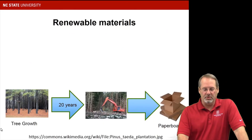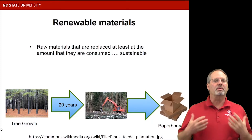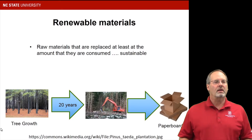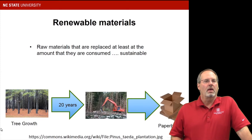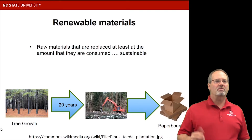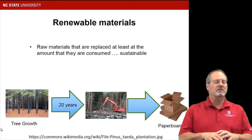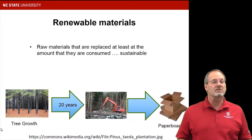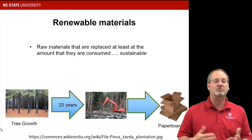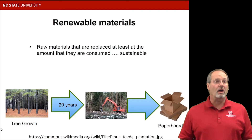Now let's contrast that with renewable materials. Renewable materials come from raw materials that are replaced at least at the rate they are consumed, and we consider that sustainable. My example is making paper boxes — we've got to harvest the forests. If we plant trees at the same rate that we're harvesting, the total stock of forest resources will be maintained constant over time, so future generations will have the same amount of tree resources we have right now. That's renewable, that's sustainable, and that's at the heart of a bioeconomy.